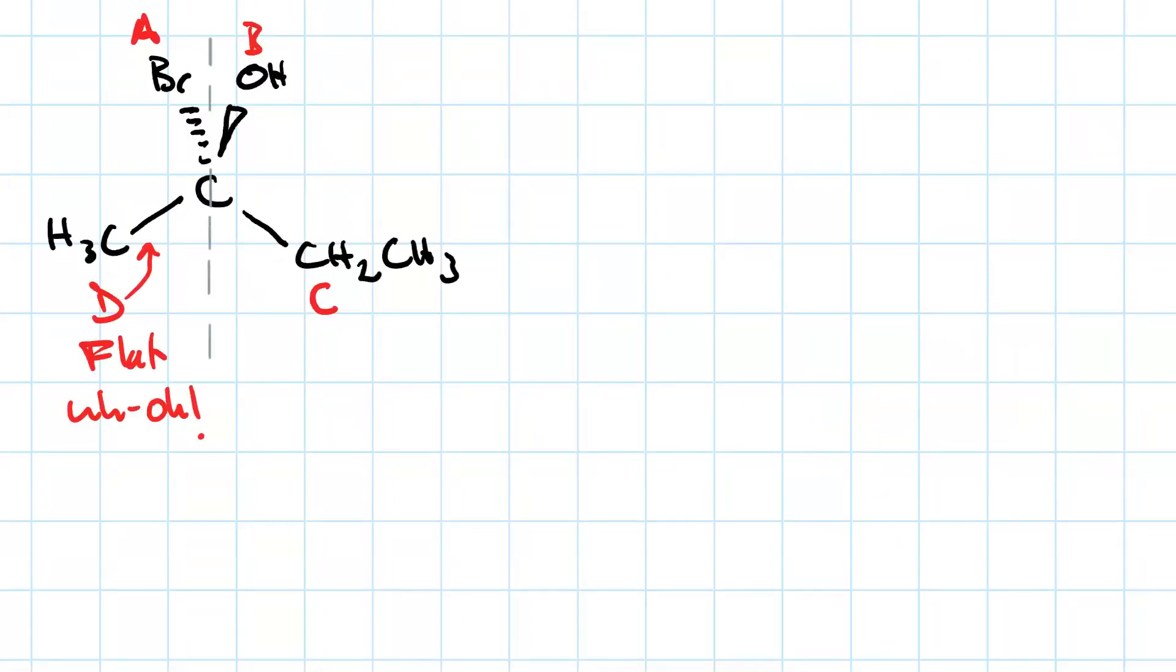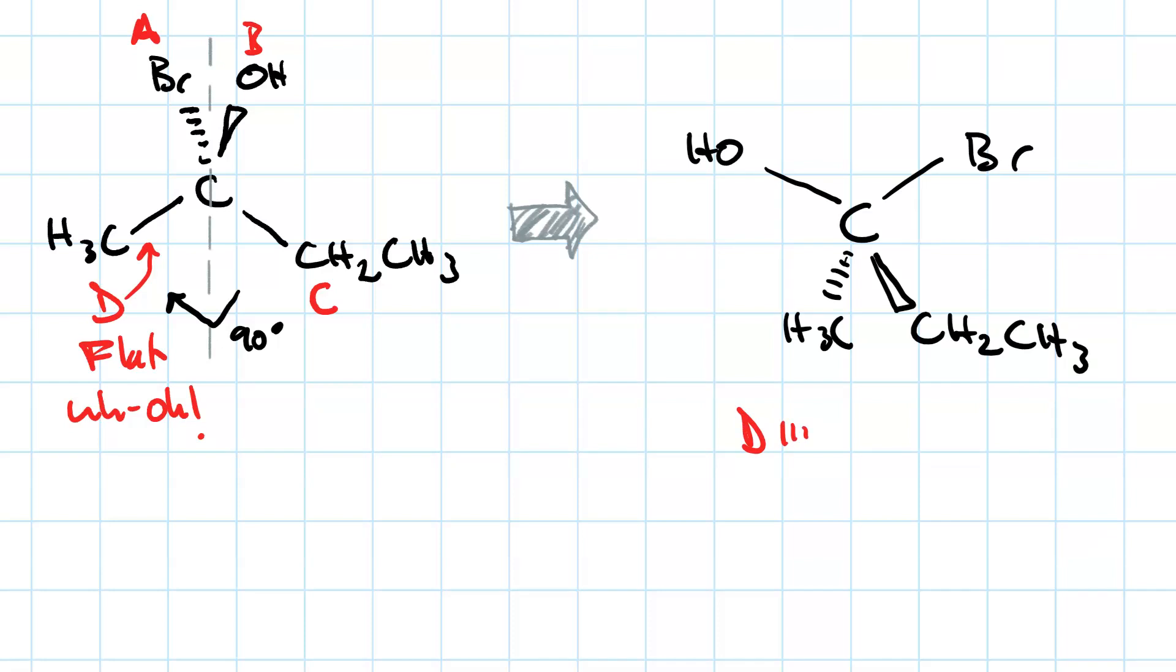So what if we did a 90 degree rotation around the vertical axis? So that would put our methyl group on a dash, it would put our ethyl group on a wedge, it would take the hydroxyl group which was coming toward us and have it going up and to the left, it would take our bromine which is going away from us and have it going up and to the right. And now we've got group D on a dash, that's fine.